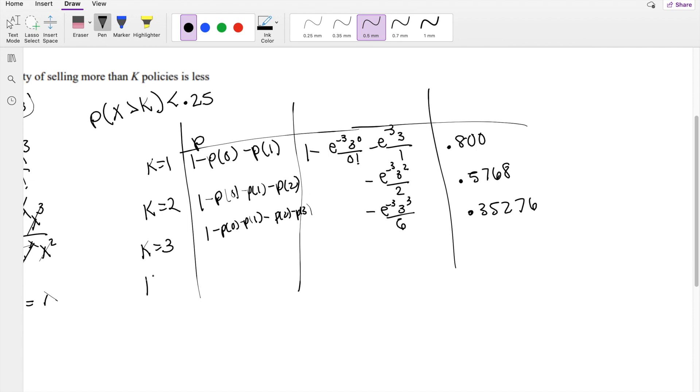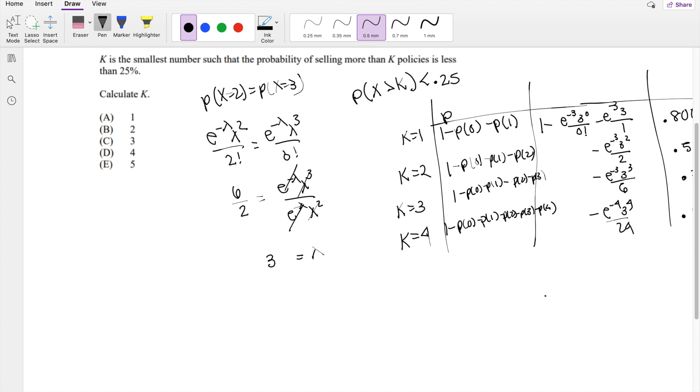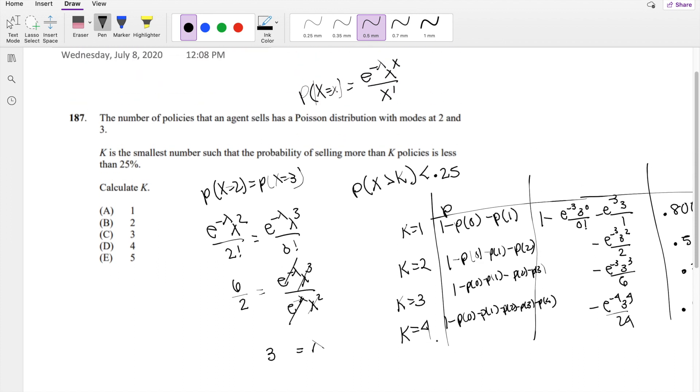What if k equals 4? That's everything before: 0 minus 1 minus 2 minus 3 minus 4. From the previous calculation, I subtract e to the negative 3, 3 to the 4th over 24, which equals 0.1847—definitely less than 0.25. So k is the smallest value such that the probability of selling more than 4 policies is less than 25%. Therefore k equals 4, answer D.